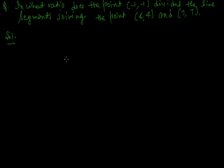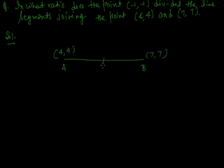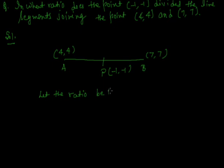We have to find the ratio in which the line segment joining point A (4, 4) and point B (7, 7) is divided by point P (-1, -1). Let the ratio be k is to 1.